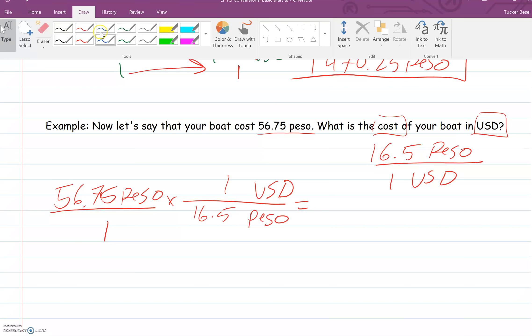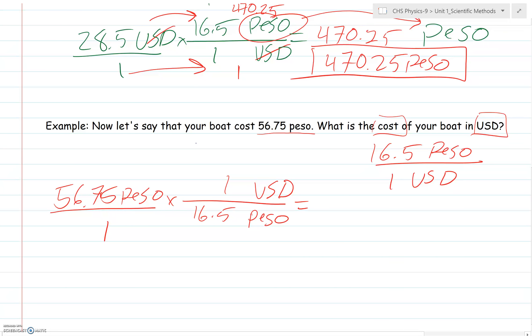Now I need to find my answer. The way I'm going to do that is just like before. Peso on the top, peso on the bottom. Those go away. I multiply straight across and divide in the end. So 56.75 times 1 is 56.75. 1 times 16.5 is still 16.5. I do 56.75 divided by 16.5 in my calculator. I end up with a number, and I'm going to round that to 3.44. The units on that would be USD, United States dollars. That would be my answer.